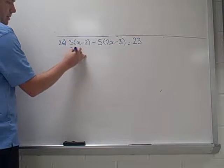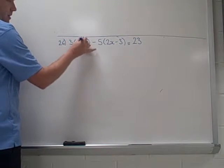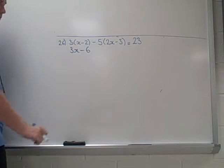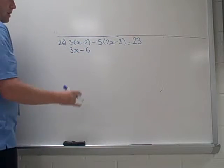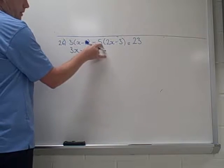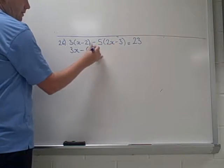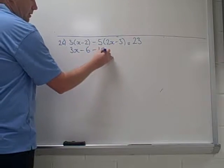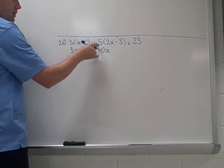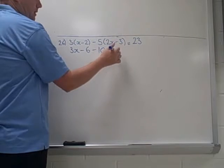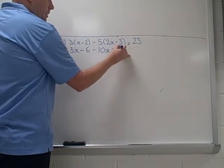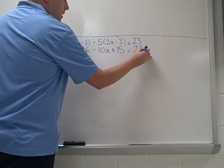So 3 times x is 3x. 3 times negative 2 is negative 6. And on this one we need to be careful because we're actually timesing by negative 5 here. So negative 5 times 2x is negative 10x. Negative 5 times negative 3 is 15.